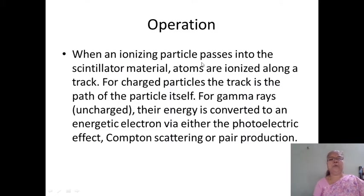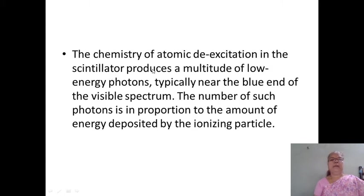When an ionizing particle passes into the scintillator material, atoms are ionized along a track. For charged particles, the track is the path of the particle itself. For gamma rays, their energy is converted into an energetic electron via either the photoelectric effect, photon scattering, or pair production. The chemistry of atomic de-excitation in the scintillator produces a multitude of low energy photons, typically near the blue end of the visible spectrum.